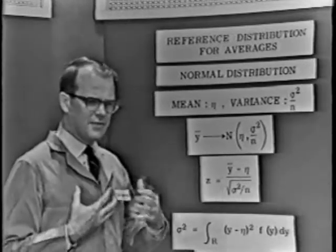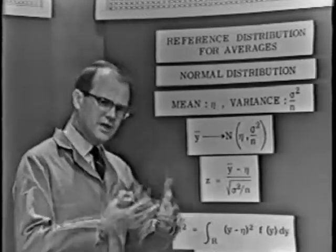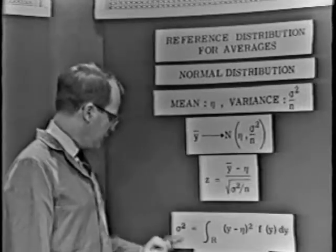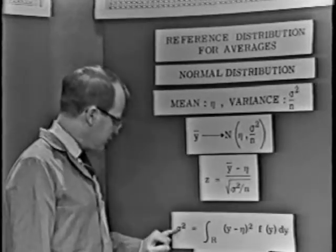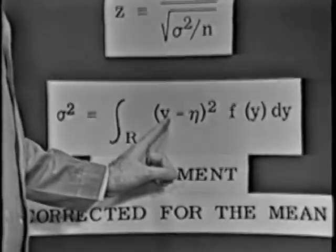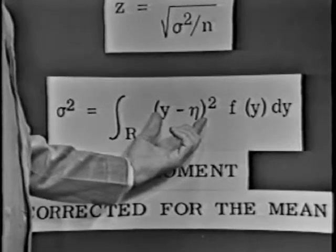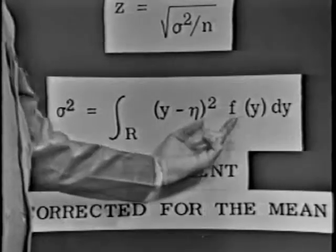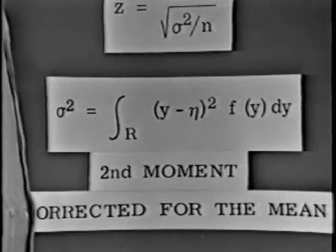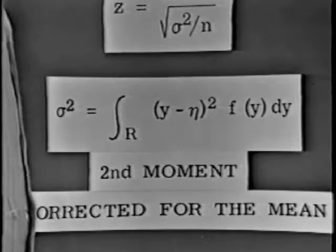So much for averages. And what about the variance? Well, the variance is the second moment of the distribution corrected for the mean. We've defined sigma squared, the variance, to be the second moment corrected for the mean. So you take the observation, subtract the mean, square those little deviations, multiply by their frequencies, and sum them over the region for which the observations are defined.